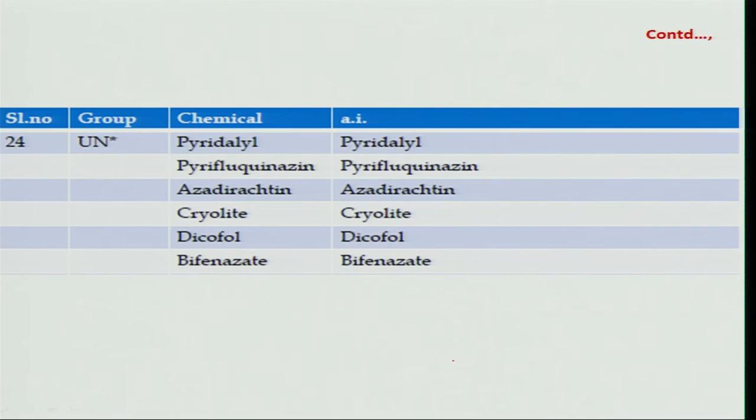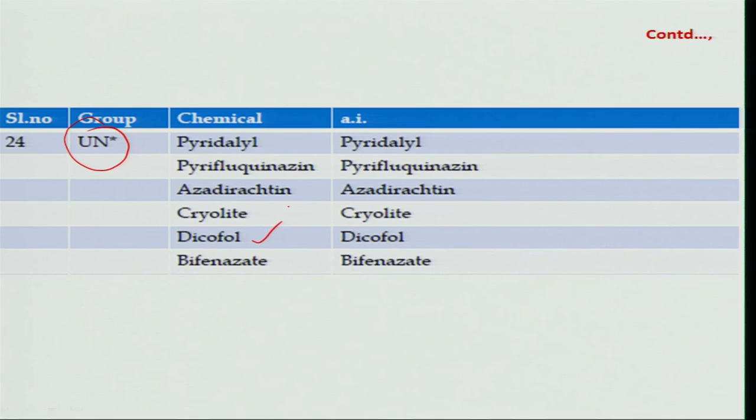Some molecules are still undescribed and have been grouped under the code name UN, wherein the chemistry and toxicity level still need to be understood. Under this category, there are many molecules including dicofol — one of the older molecules — and pyridylol, a new molecule whose toxicity level and chemical nature still needs to be understood. That is how the new class of insecticides has been classified, and they are finding a major role in insect pest management because of their low mammalian toxicity and low quantity usage in IPM.